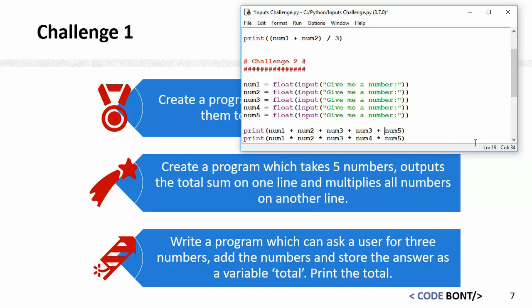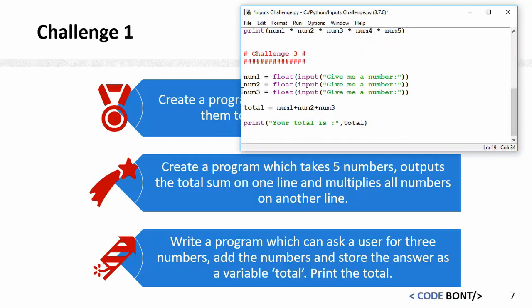The bottom one: write a program which can ask a user for three numbers, add the numbers, and store the answer as a variable called total, then print the total. This is Challenge 3, so it's number one, number two, number three. We are working backwards in Python, so number one, two, three, adding these together. It'll save this total, and then what I've done is it says your total is whatever the total is.